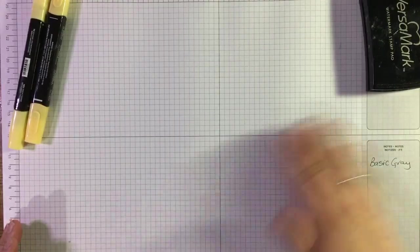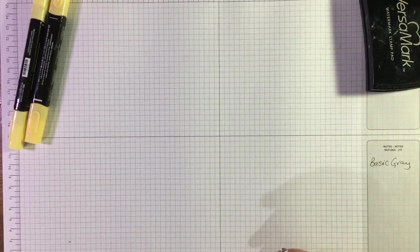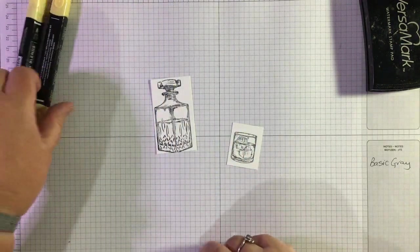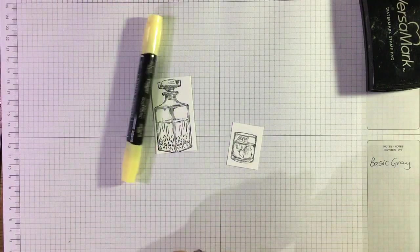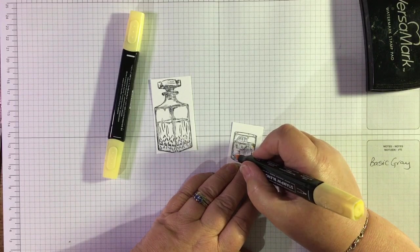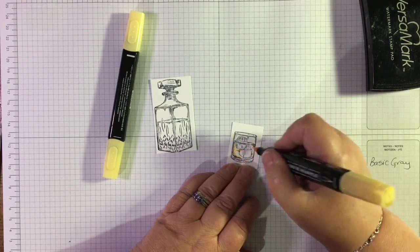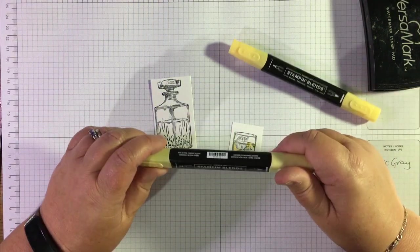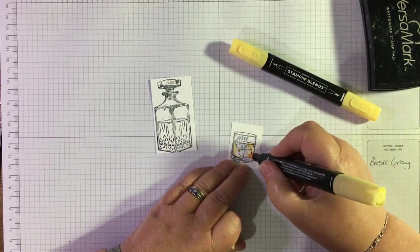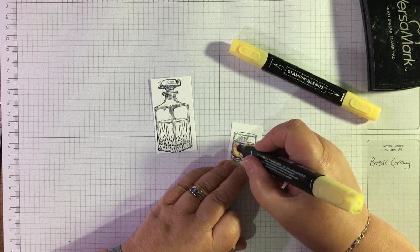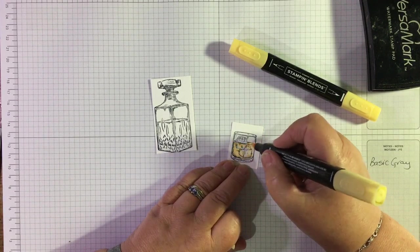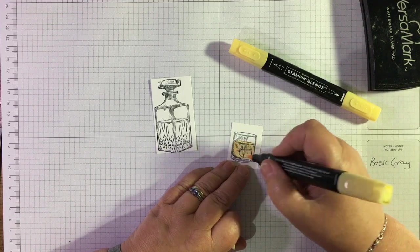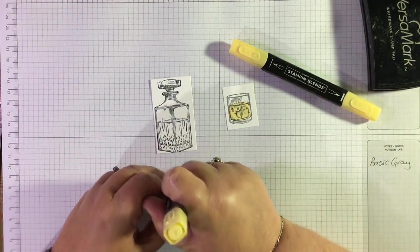So that's that. Right, so I'm thinking I probably could color in. I'll do this first. I'm just using a bit of So Saffron. I'm just coloring in what is the liquid part, just need to use your imagination for the rest. So just put some dark bits in with the dark So Saffron, and then I'm just going to go over all of that with the light So Saffron.